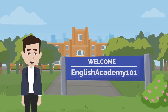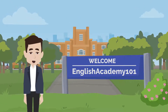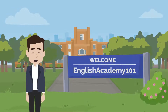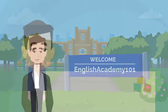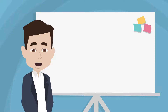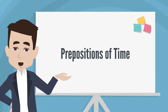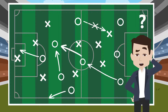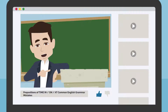Hi, welcome to English Academy 101. My name is Michael, and I'm here to help you with your English learning journey. Today, we are going to learn about prepositions of time, namely the prepositions in, on, and at. These prepositions can be very confusing, but we are here to help you better understand. If you would like to skip ahead to any part in today's lesson, we have added video chapters below that you can select.